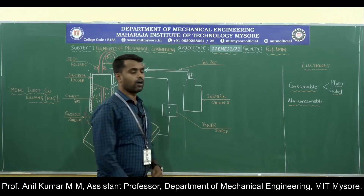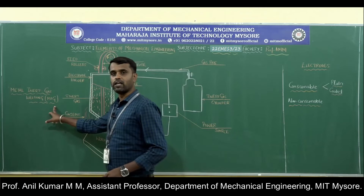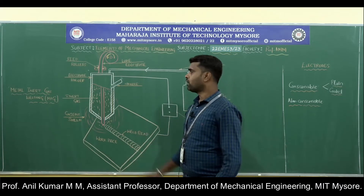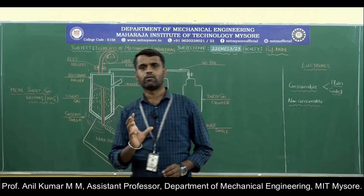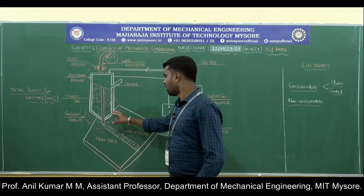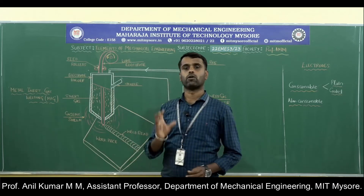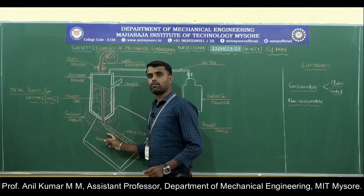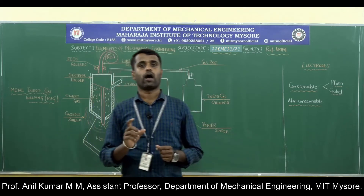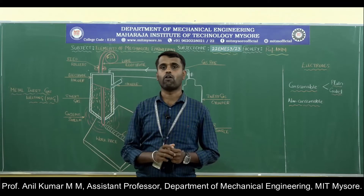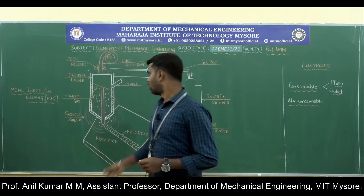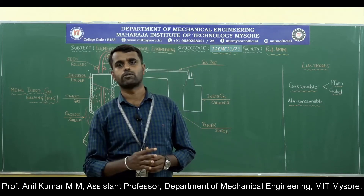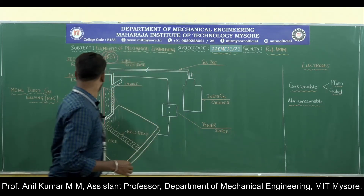The metal inert gas welding process is popularly known as MIG welding. This is the block diagram of the MIG welding process. It is one type of arc welding process where two metal pieces are joined by heat generated by an electric arc, struck between the consumable uncoated electrode and the workpiece in the presence of an inert gas atmosphere. The electrode also acts as filler material to fill the gap between the two metal pieces and form the joint.